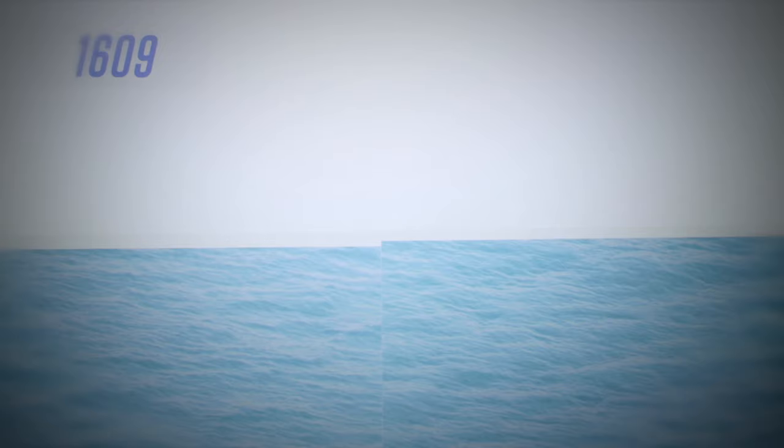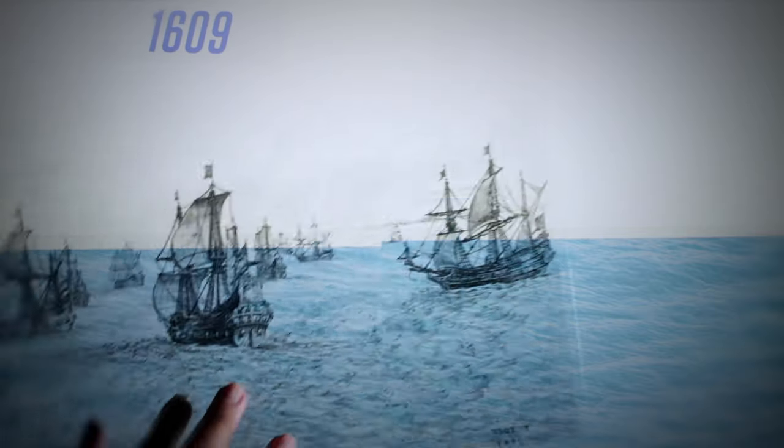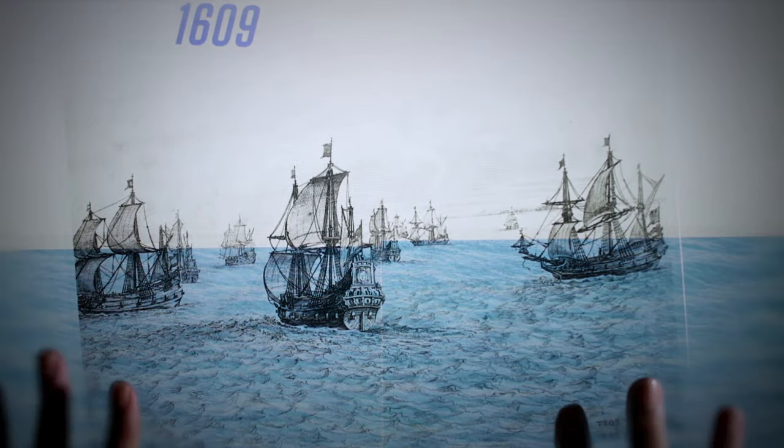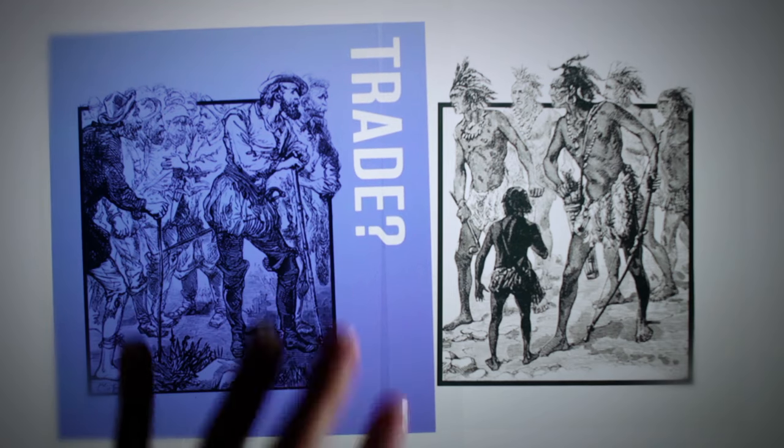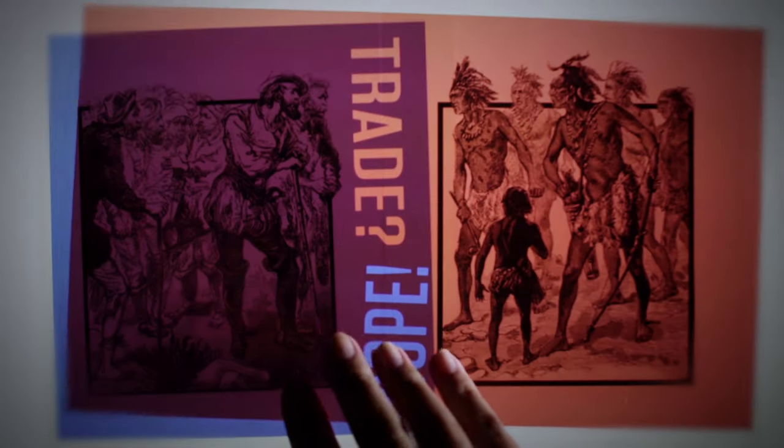In 1609, new ships arrived with more mouths to feed. With some 300 hungry colonists, but less to go around, the Powhatans, who were also struggling to feed themselves, cut off trade.